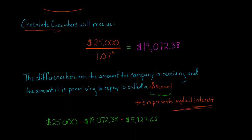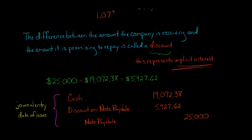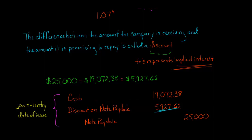Even though Chocolate Cucumbers is not making interest payments throughout the note, that discount — the difference between what they're promising to pay and what they're receiving — that is the interest on this note. Here would be the journal entry when they actually issue the note: debit the cash account for $19,072.38, debit the discount for $5,927.62, and credit note payable for $25,000.